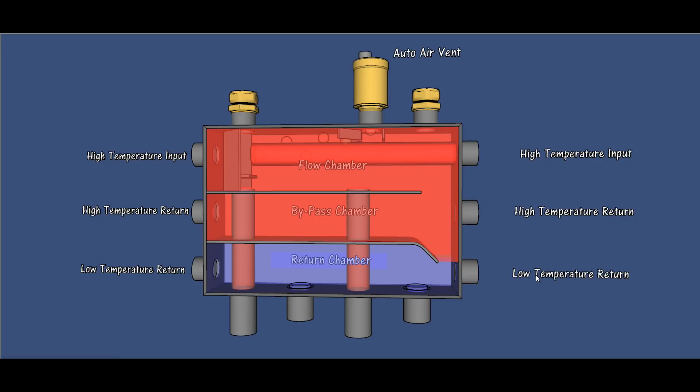You could have a high temperature return, say for instance on the left, and a low temperature return to a different boiler on the right. Or vice versa - a low temperature boiler on the left hand side with the return taken from the bottom chamber.